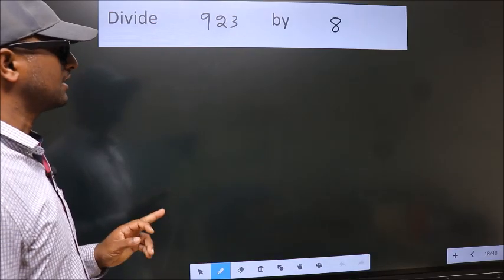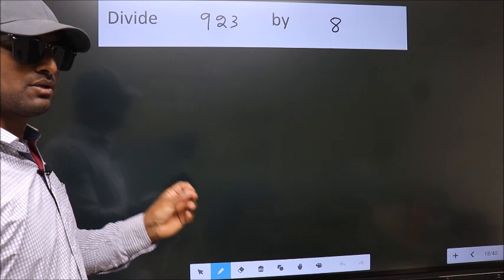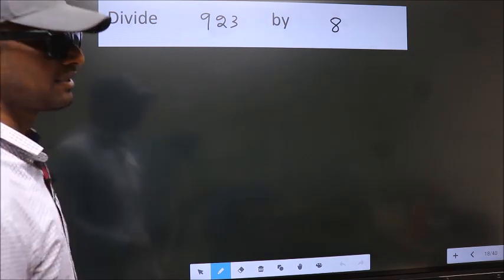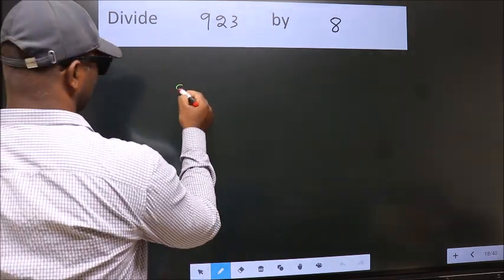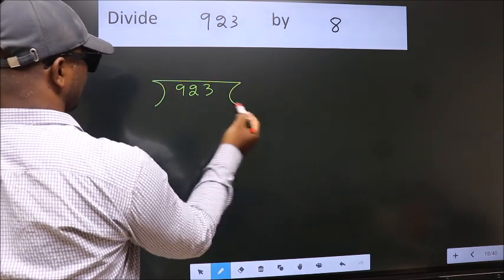Divide 9.23 by 8. To do this division, we should frame it in this way. 9.23 here, 8 here.